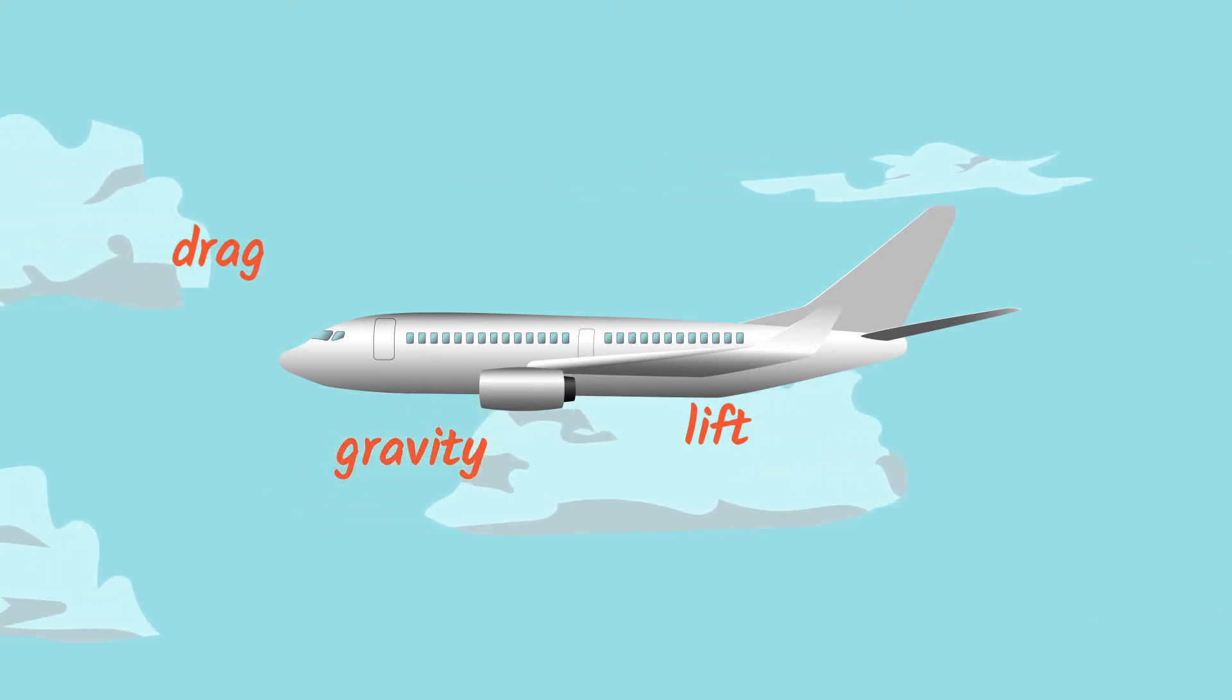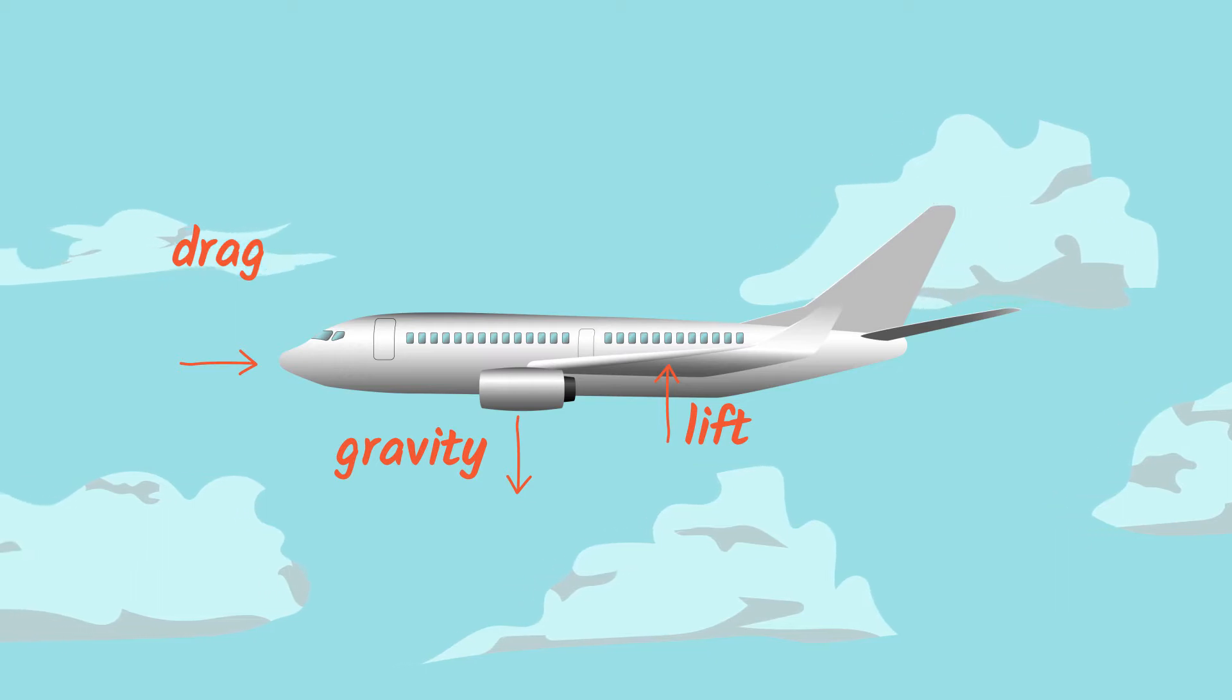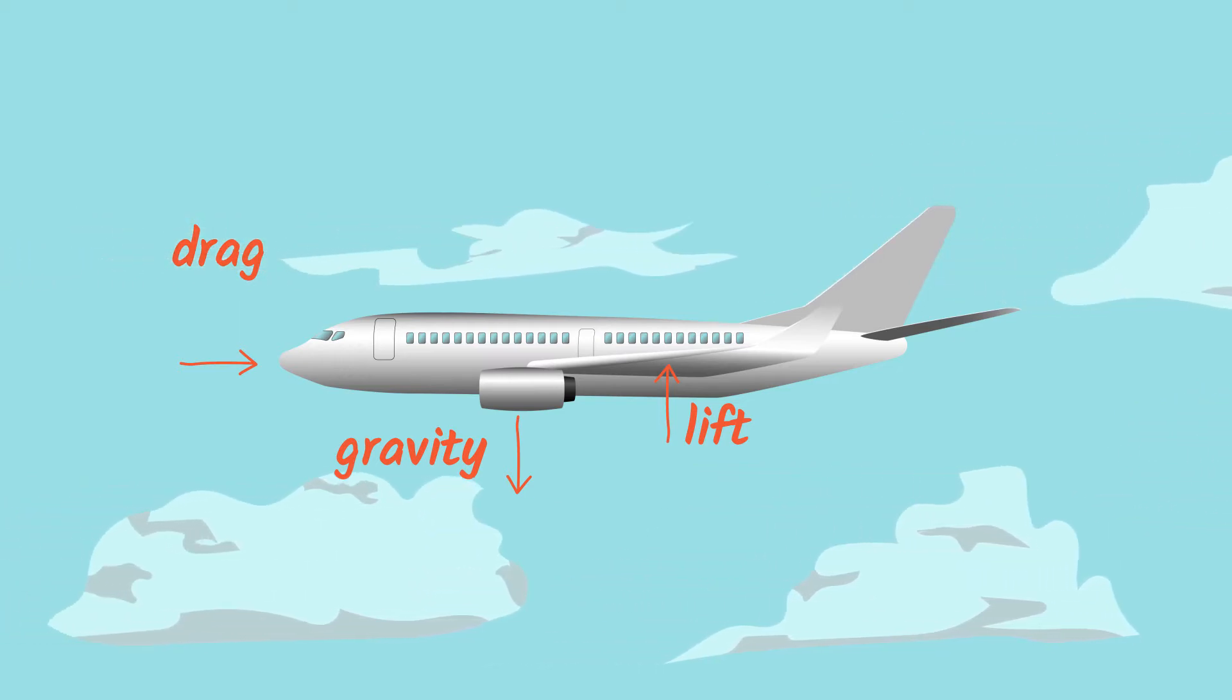Gravity is pulling the aircraft down towards the Earth. Lift is pushing it up and helping it fly. And drag is pushing against the wing when it's moving forward. The balancing of all these forces is important when designing aircraft.